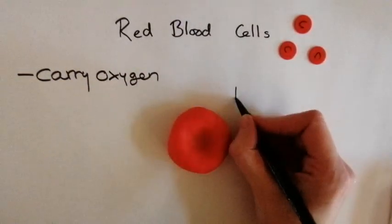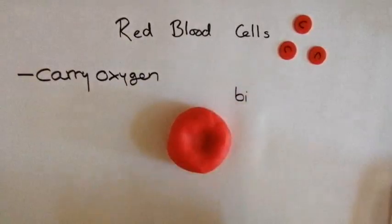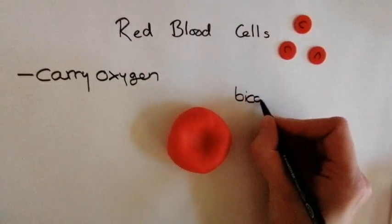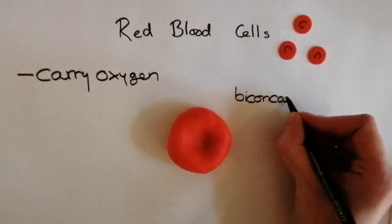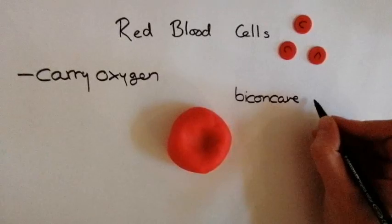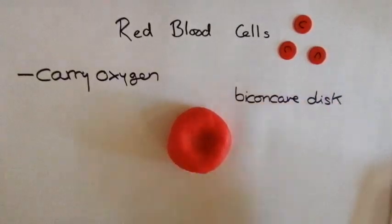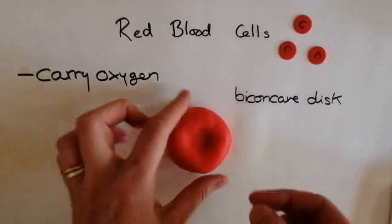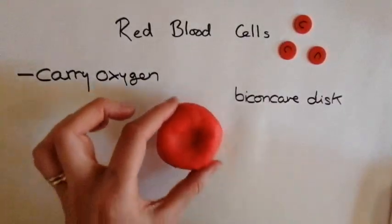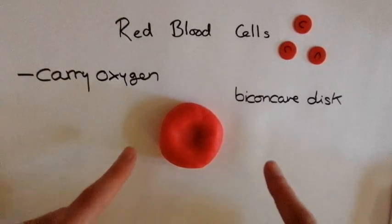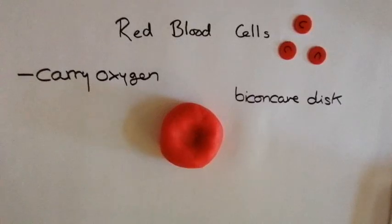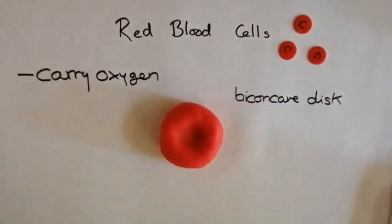That is a ridiculously complicated way of saying it's the same kind of shape as a ham bagel. It goes in in the middle but doesn't go the entire way through — so it's not a tunnel, it's almost a tunnel. It's very thin in the middle and fat on the outside. Now this gives it a very large surface area. Because it has a very large surface area, it's very easy for oxygen to diffuse in and out. So that's one of the reasons why this is really helpful, and that relates back to carrying oxygen.